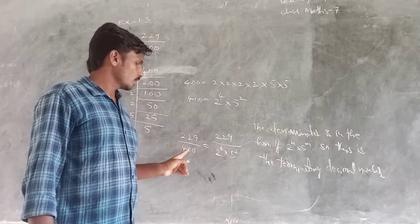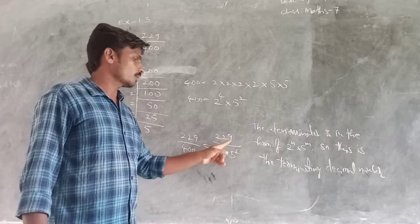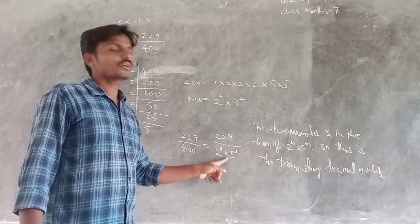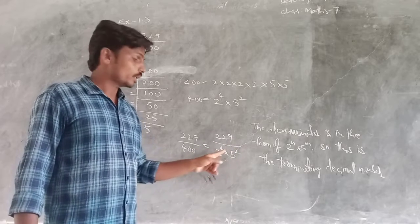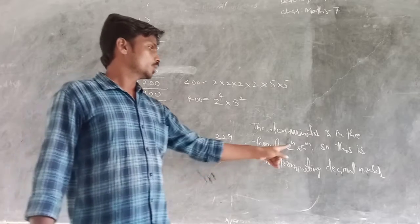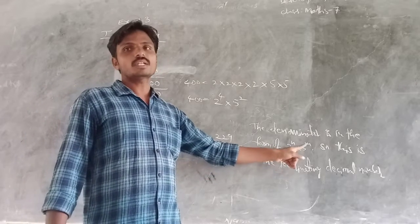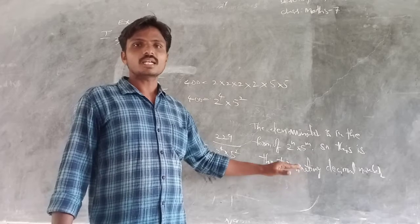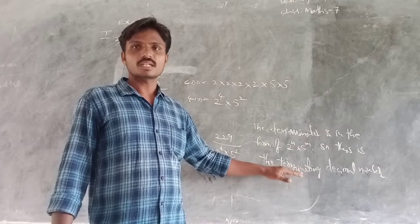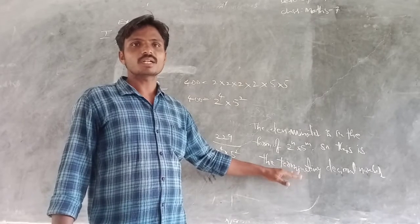Here 229 by 400 equals 229 by 2 power 4 into 5 power 2. It is in the form of 2 power n into 5 power n. That is why it is a terminating decimal number.